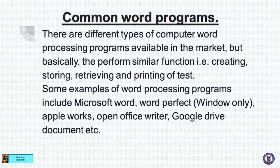Some examples of word processing programs include Microsoft Word, which is the most current; WordPerfect, which is only used in Windows; HubSpot; Apple Works; Open Office Writer; Google Docs; and Google Drive Documents. These are examples of word programs. They are different types, but basically they can be used to perform similar functions: creating, storing, formatting, retrieving, and printing of text.